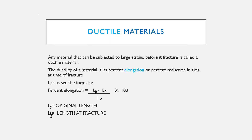Let us discuss ductile materials. Any material that can be subjected to a large strain before it fractures is called ductile. The ductility of a material is measured by percent elongation or percent reduction in area at fracture. Percent elongation equals LF minus LO divided by LO into 100, where LO is the original length and LF is the length at fracture. In contrast, brittle materials exhibit little or no yielding before failure. The classic example of a brittle material is gray cast iron.